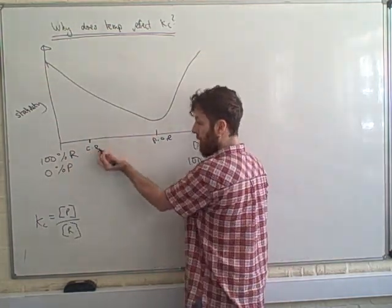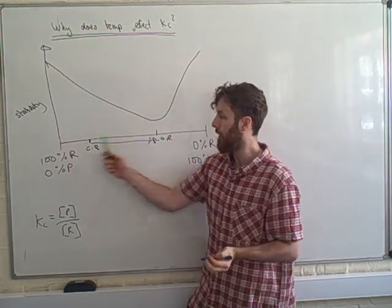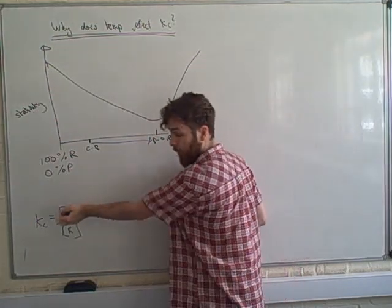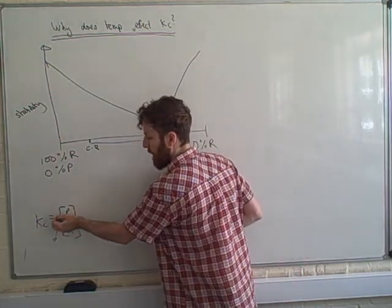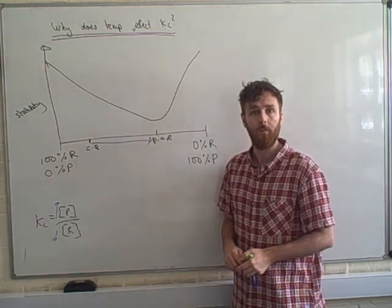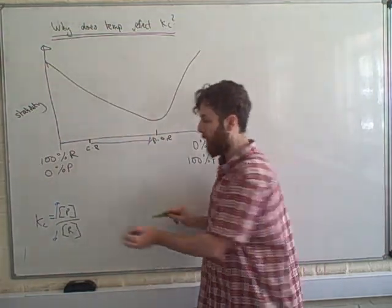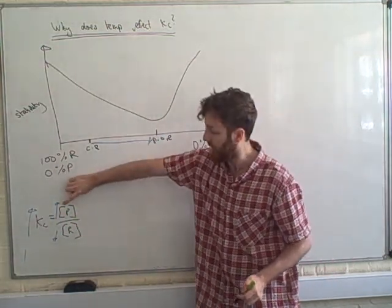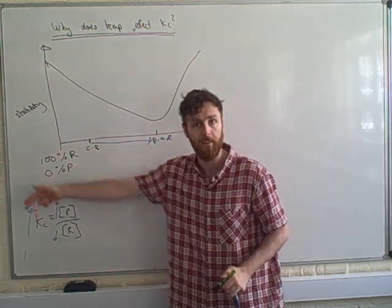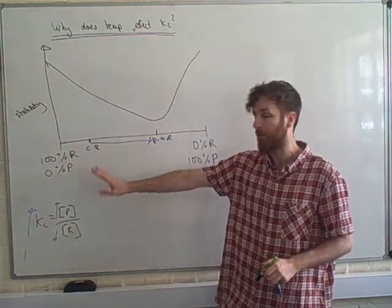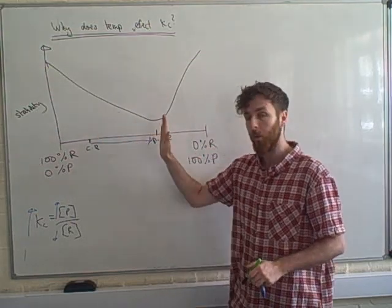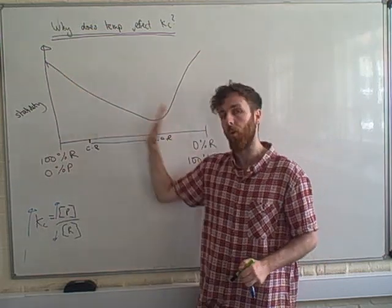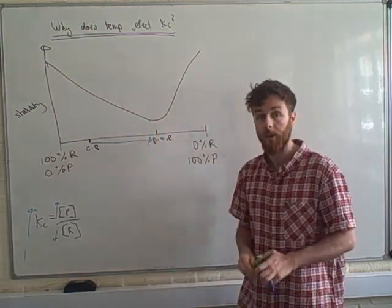Concentration and pressure don't change the position of equilibrium — they just change your current position. But in this example, changing temperature has shifted the position of equilibrium to the right. To reach equilibrium again, the concentration of reactants would need to go down and products would need to go up. This increases Kc, because increasing the numerator gives a bigger answer. Kc has changed because the position of equilibrium has shifted.